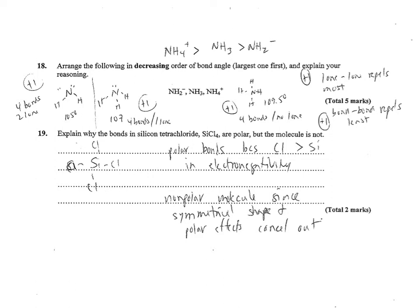Number 19, explain why the bonds in silicon tetrachloride are polar, but the molecule is not. The bonds are polar because chlorine has a greater electronegativity, so you had to mention something about electronegativity because that's what makes polar bonds. The molecule is nonpolar because the symmetrical shape allows the polar effects to cancel out, so there is no net dipole on this molecule.